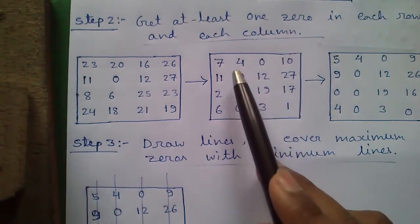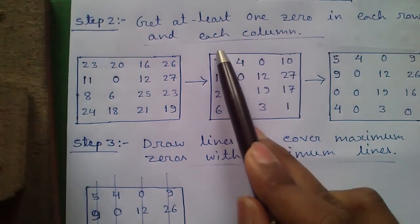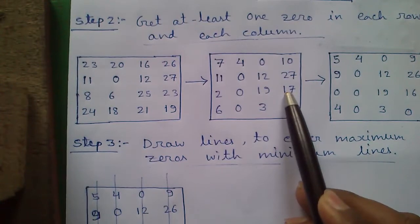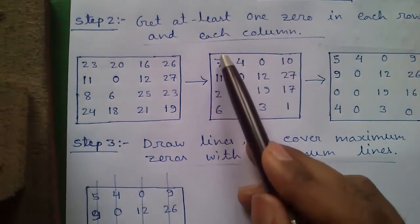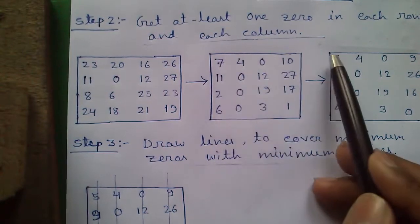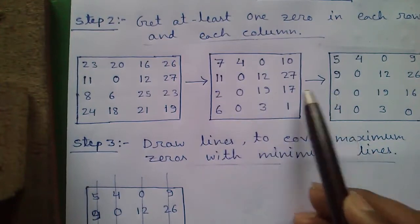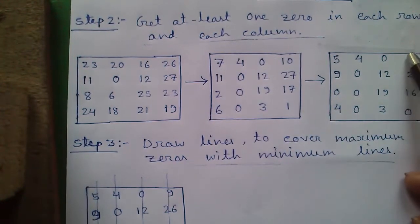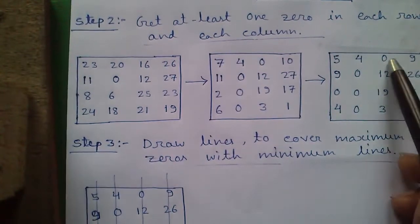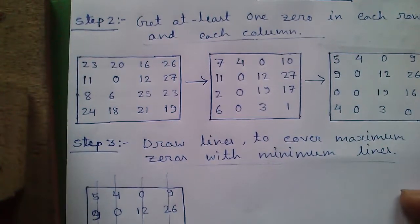Again we will scan for each column whether it has at least one zero or not. In column 1 and column 4 we don't have any zero, so we will do the same operation. In column 1 the smallest number is 2. 7 minus 2 is 5, 11 minus 2 is 9, 2 minus 2 is 0, and 6 minus 2 is 4. Similarly do the same for column 4 also.